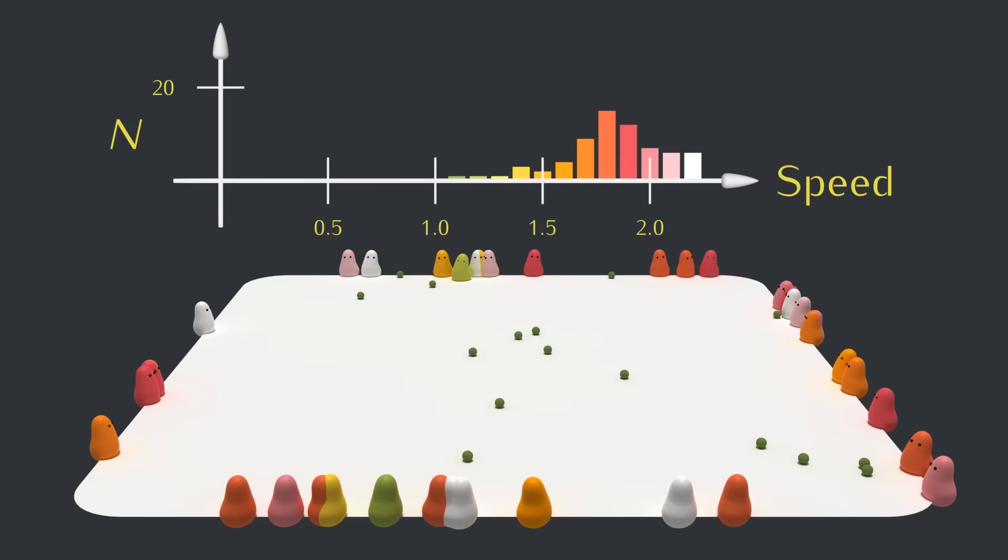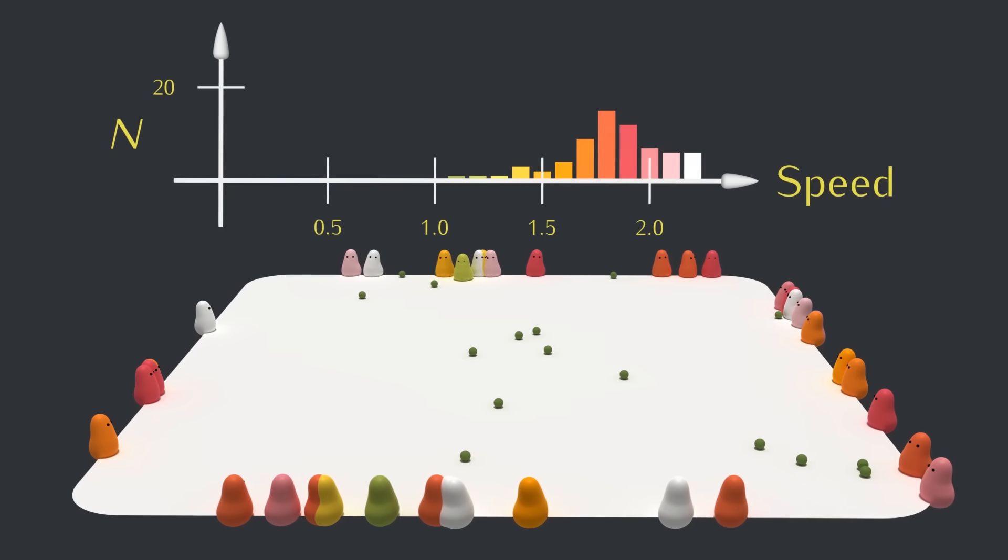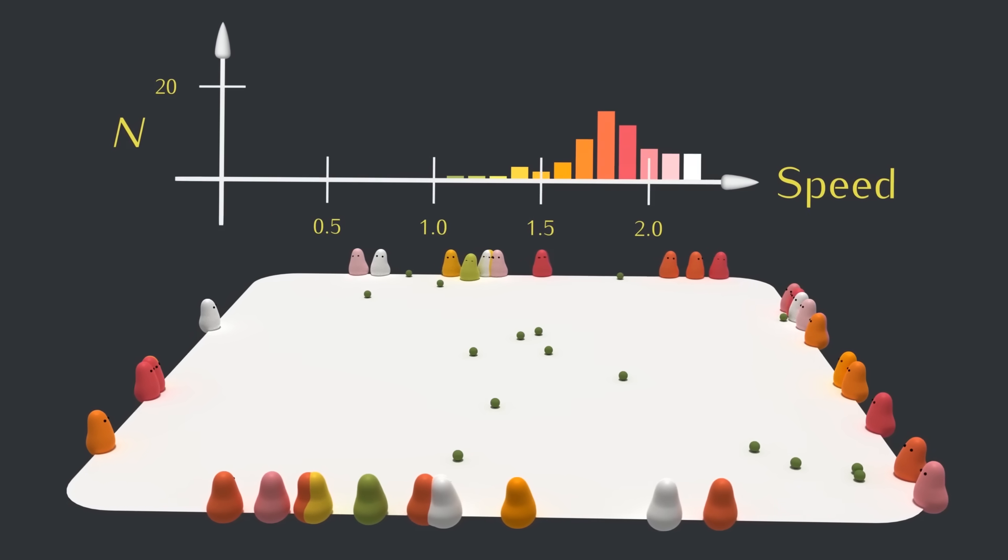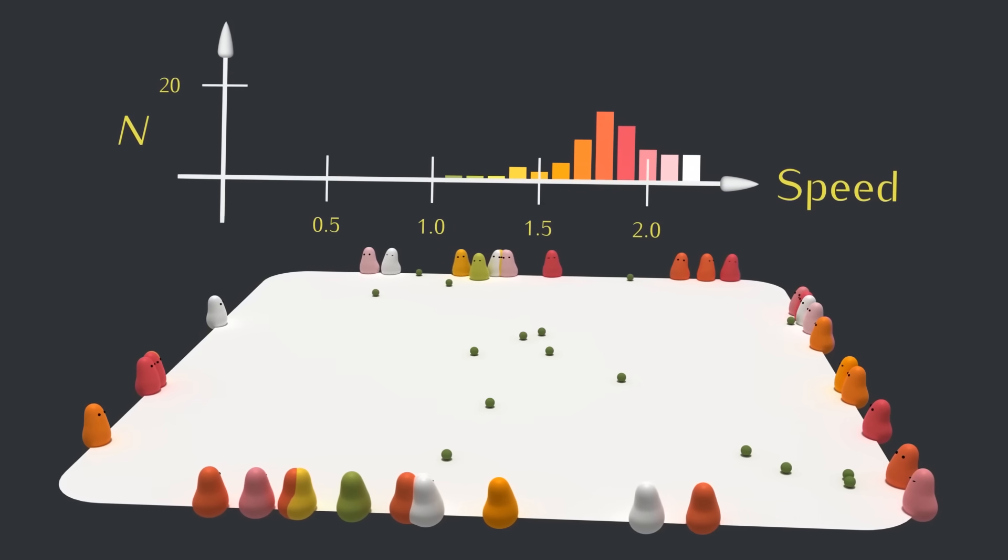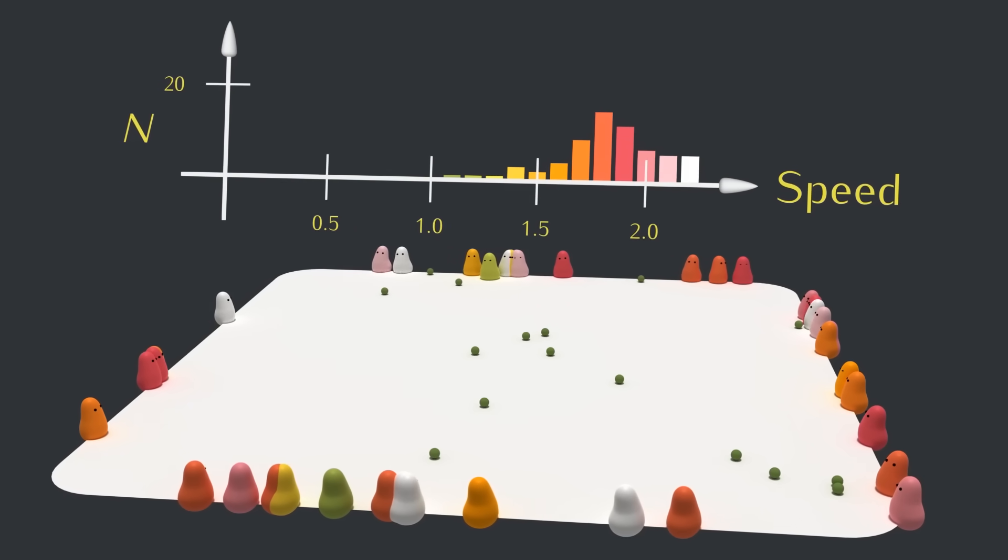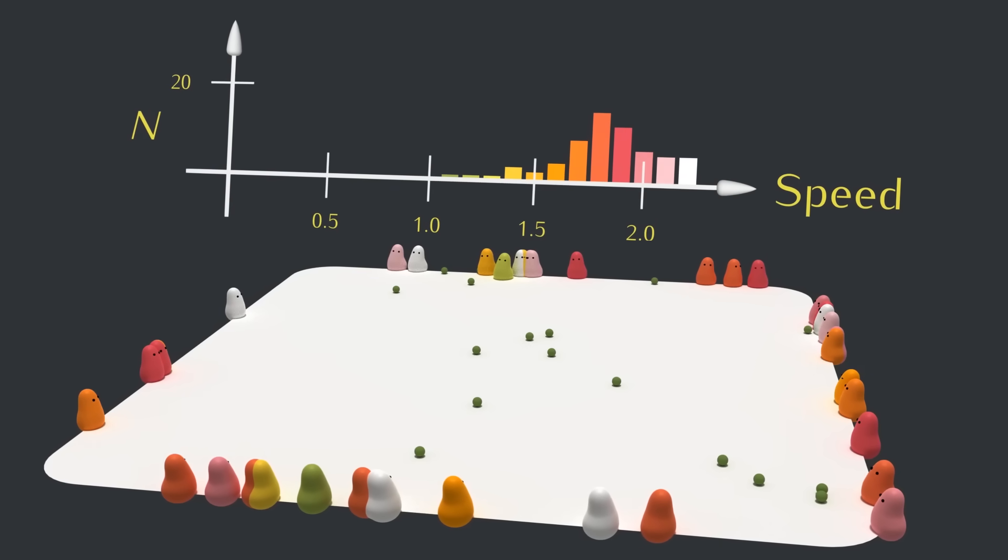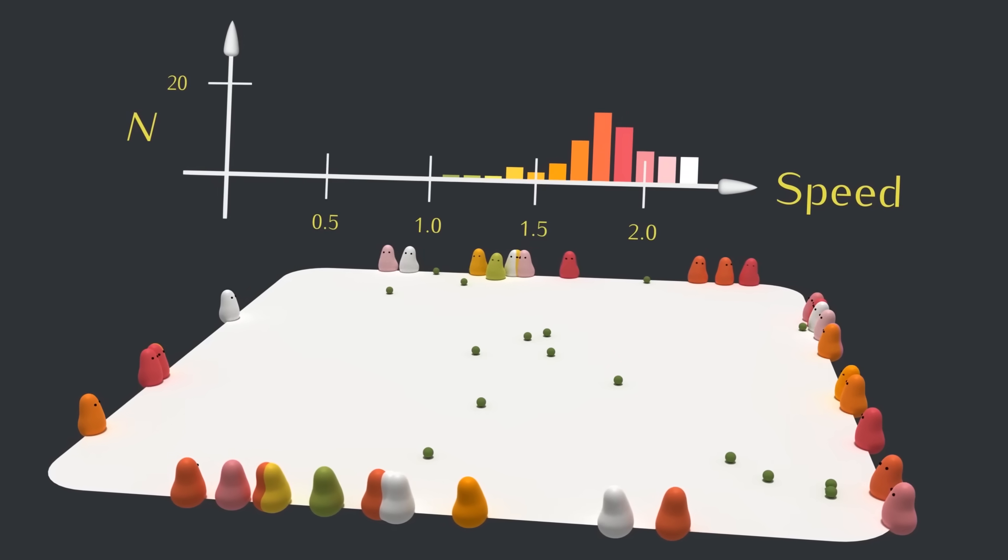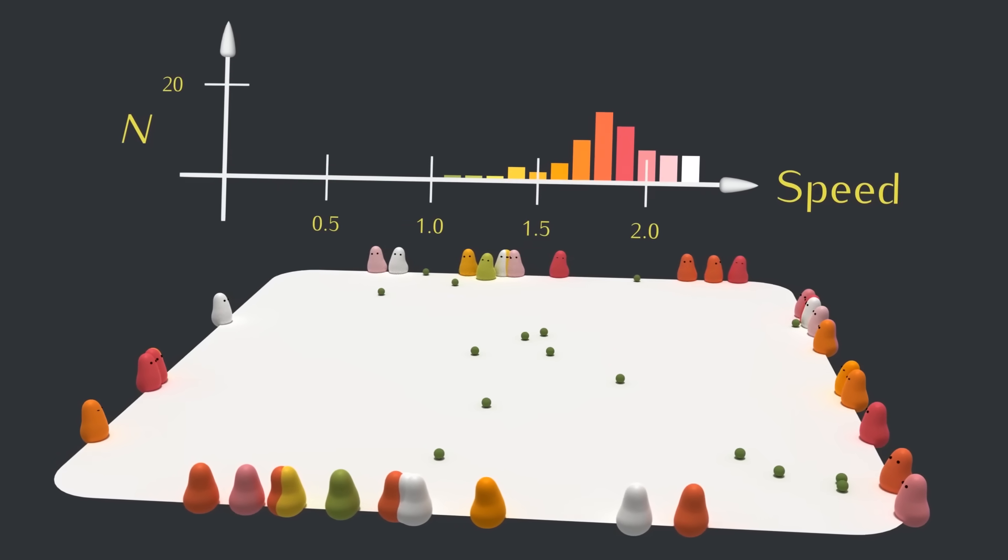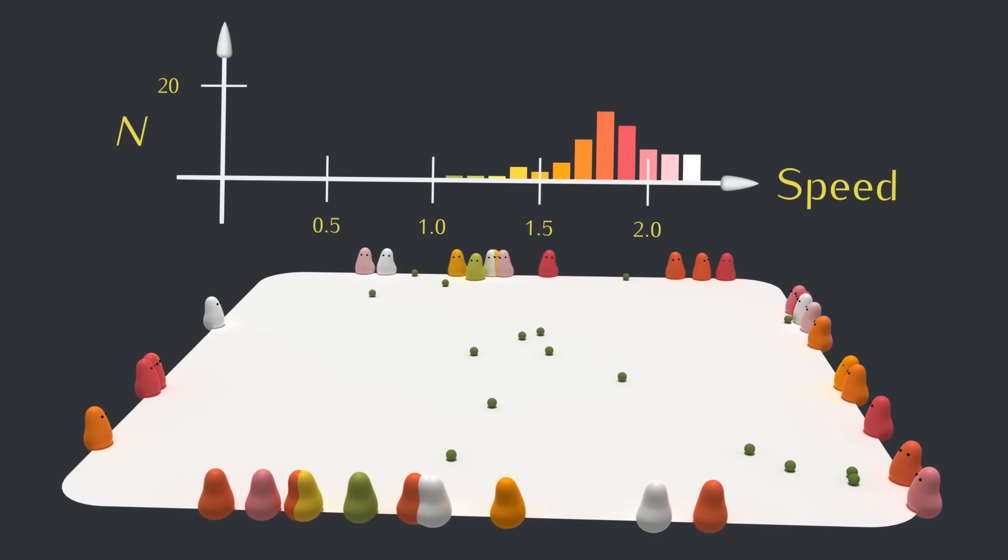Alright. So it turns out to be worth sacrificing efficiency for speed in this environment. Or at least the initial speed value I picked was slower than optimal. This is our first example of natural selection. We didn't know the best speed value going in, but the creatures mutated and somewhat randomly tried out different speed values. And then through natural selection, the population evolved to have a higher average speed over time.